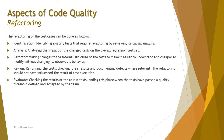Following that, you go with rerun — rerunning the tests, checking the results, and documenting defects where relevant. The refactoring should not have influenced the result of the test execution, meaning no matter what changes or updates you make, the outcome must remain the same. Finally, evaluate — checking the results of the rerun test and ending this phase when the tests have passed a quality threshold defined and accepted by the team.